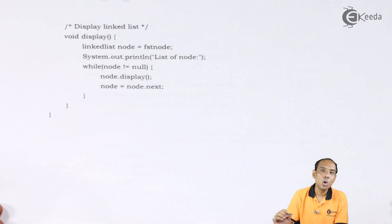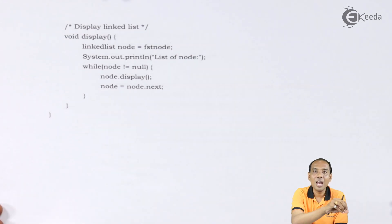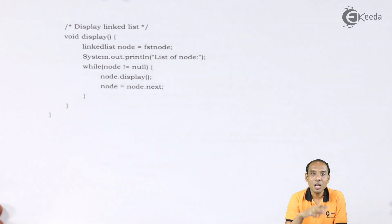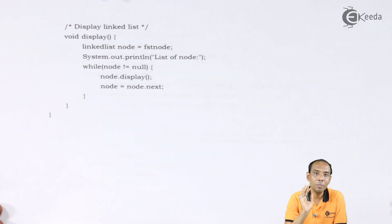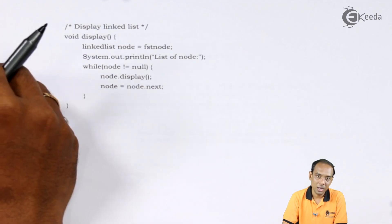Once I get node equal to null, that means I have reached the last value of the linked list. In that case I am no longer going to go ahead because I have reached the last node of the linked list.